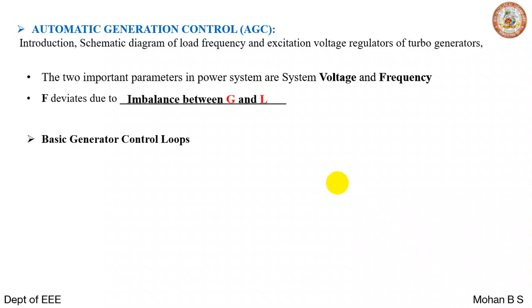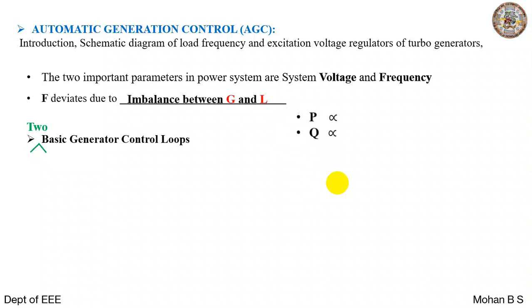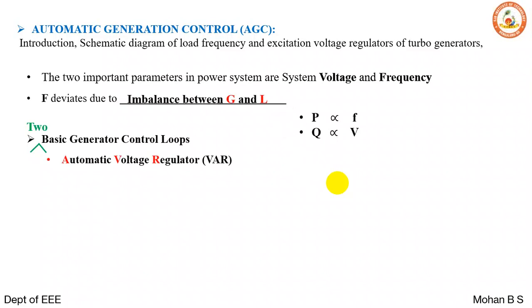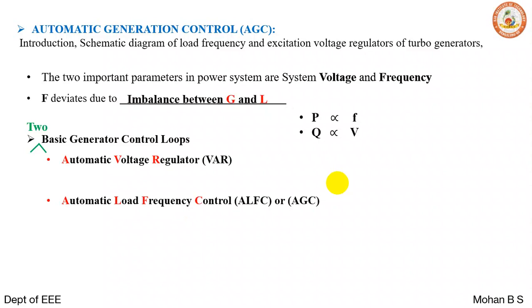We have two basic generator control loops. P is actually proportional to F, and Q is actually proportional to V. So the two loops are the automatic voltage regulator and the automatic load frequency control, which is also known as automatic generation control.